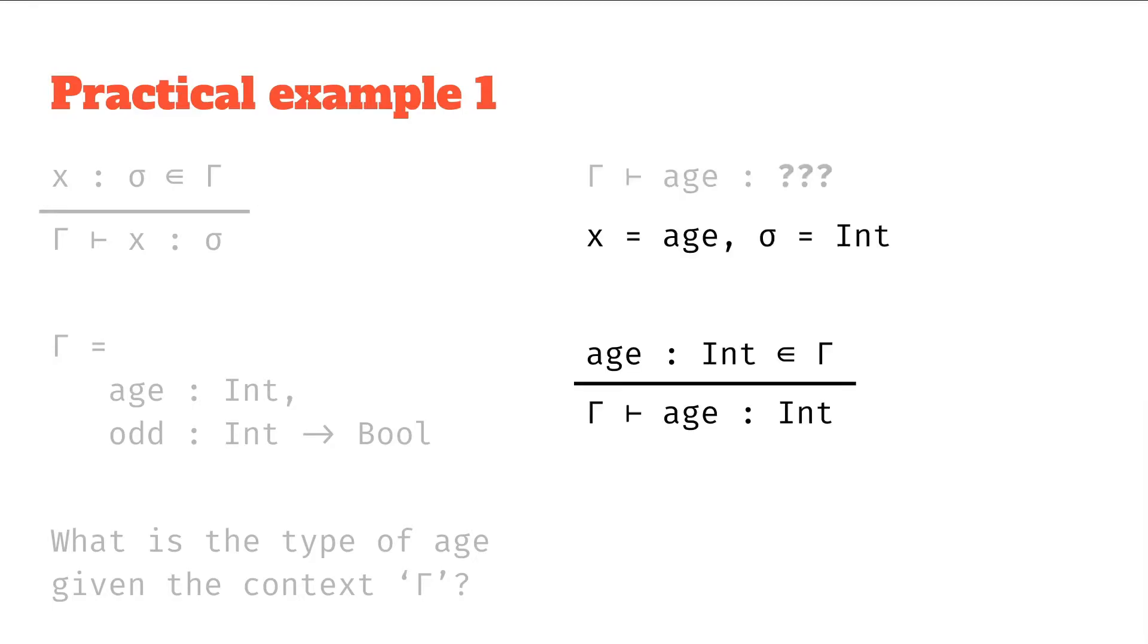So let's try substituting this into the rule. So we'll say, if we substitute in for the rule, where x is going to be age, and sigma is going to be int, what does that leave us with? Well, we end up basically with this rule, which says age has type int, being in the context, means that from the context, it follows that age is type int.